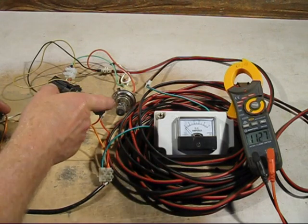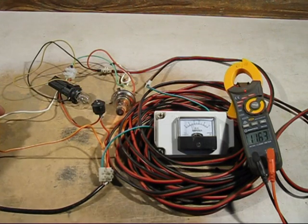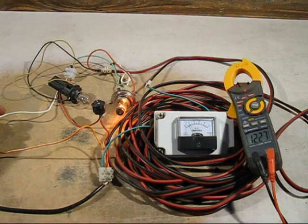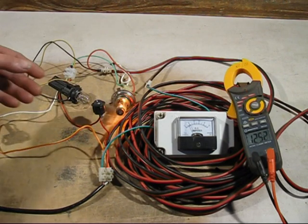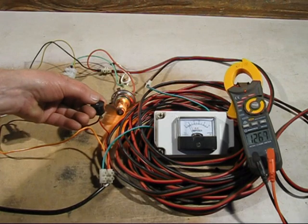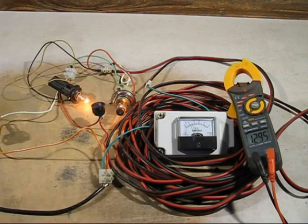And then we'll switch the big globe on, the headlight globe. Oh, look at that. She really jumps up. Now it's about well over two amps. Now we can switch both of them on. And you've got about two and a half amps going into the battery.